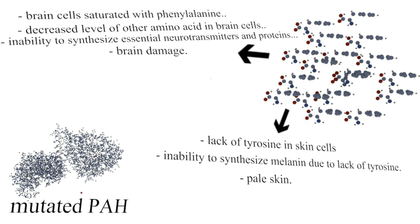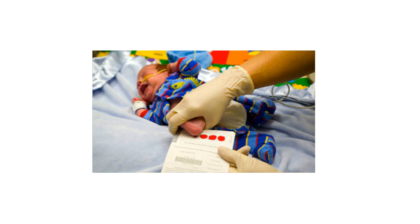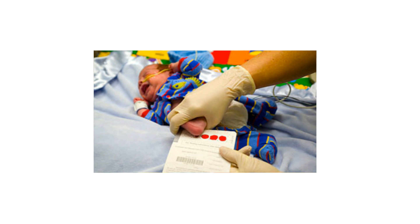As you can see, this one genetic mutation results in more than just one effect. Accordingly, this is an example of pleiotropy. And luckily, simple and routine early diagnosis and avoidance of dietary sources of phenylalanine can allow individuals with faulty copies of the PAH gene to live a perfectly normal life.